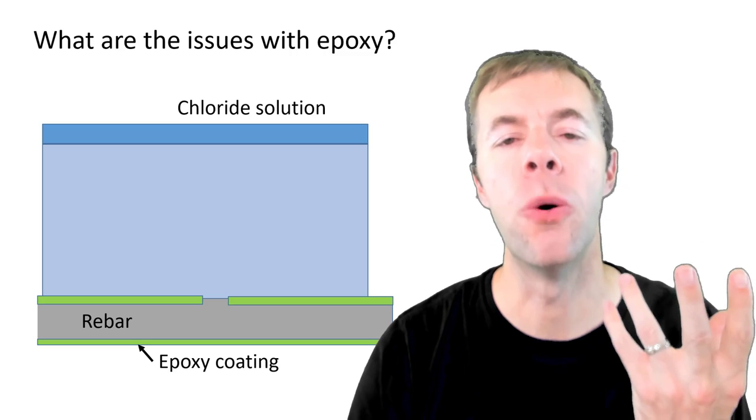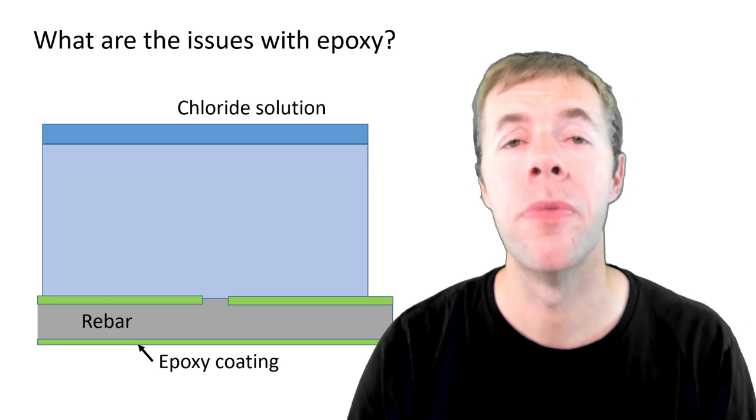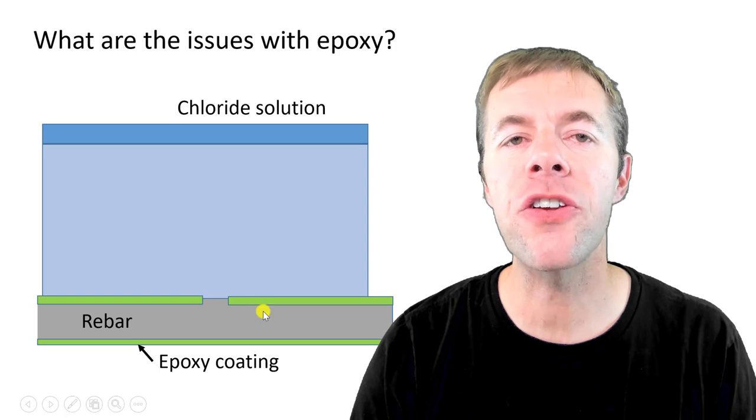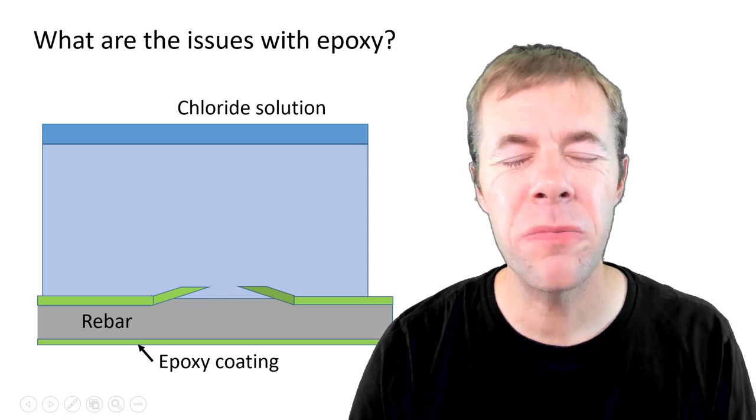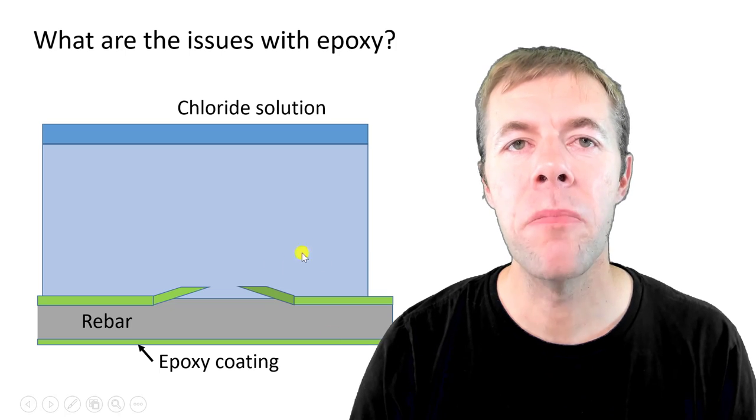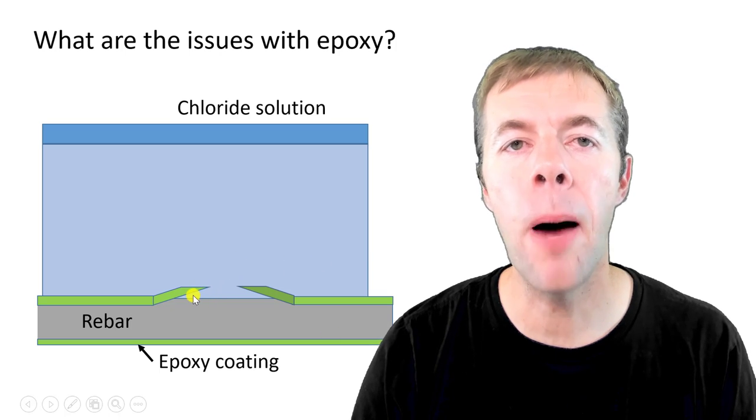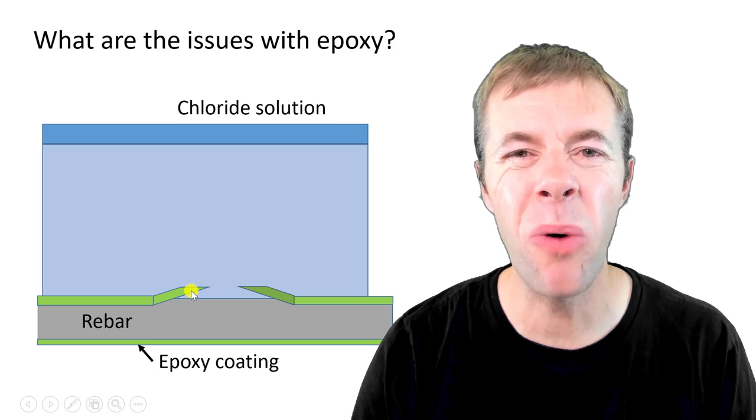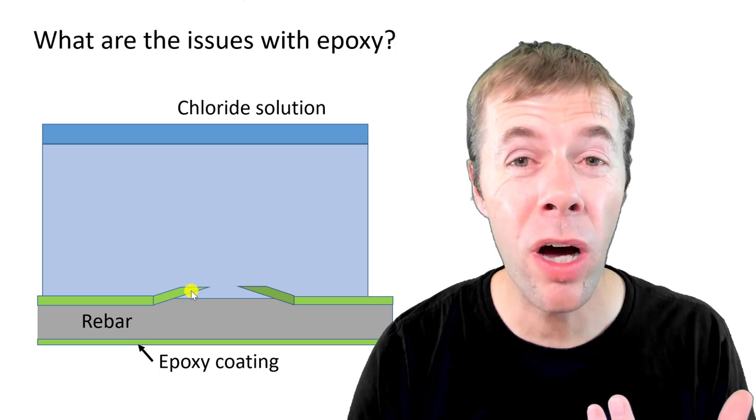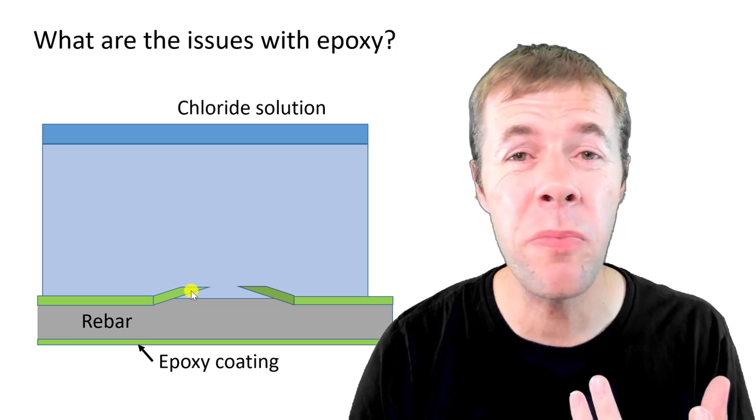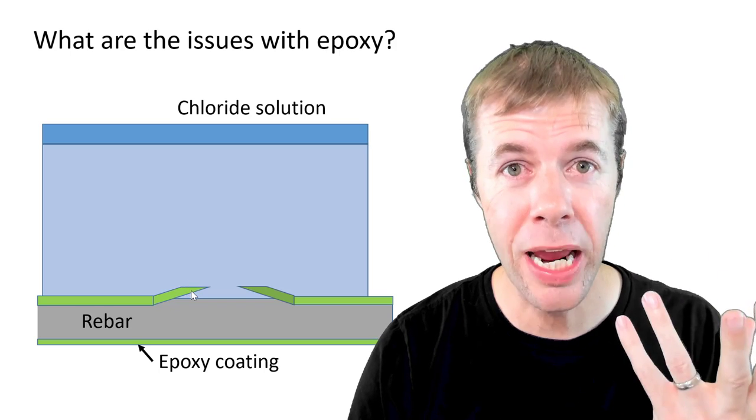So what's another issue that can happen? I said there were two. The other thing that can happen is at the surface there actually starts to be debonding. The chlorides work their way up and start to pull up the epoxy rebar. Some of it may be corrosive products, some of it may be something else, some of it may just be a chemical change of the epoxy.